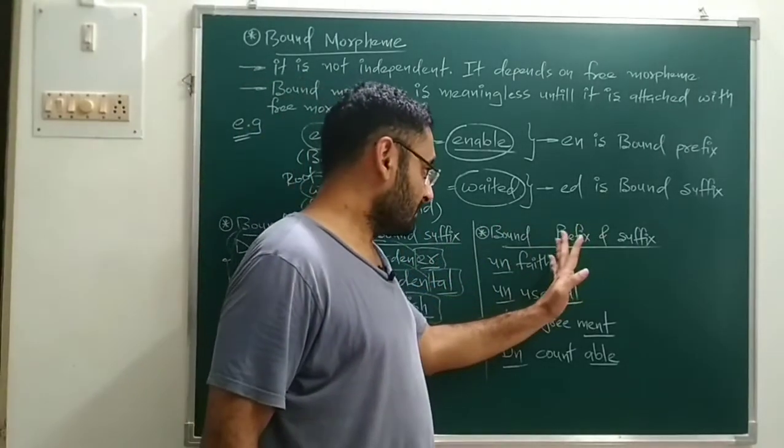Simply, free morphemes are independent — they come alone, have their own meaning, and don't require another word to indicate their meaning. Examples include: chair, fan, house, shot, TV, radio, dog, book, pencil, door, window, etc.